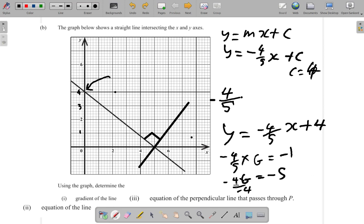So when you divide by negative 4, negative 4 cancels itself. So you have G equals negative 5 over negative 4, which is positive 5 over 4. So that is the gradient of this new line, the perpendicular line.